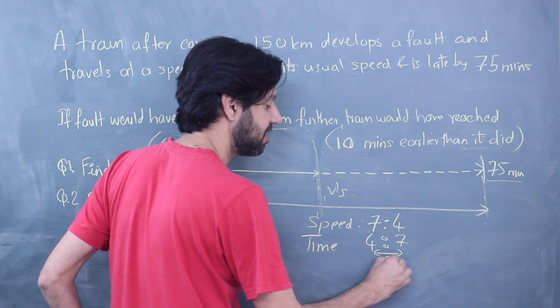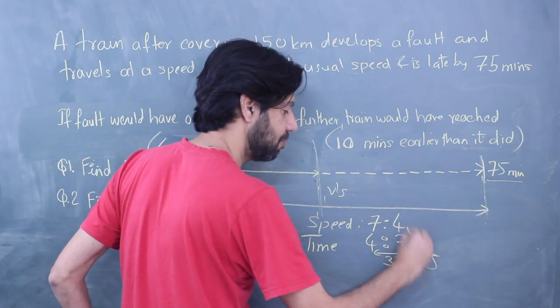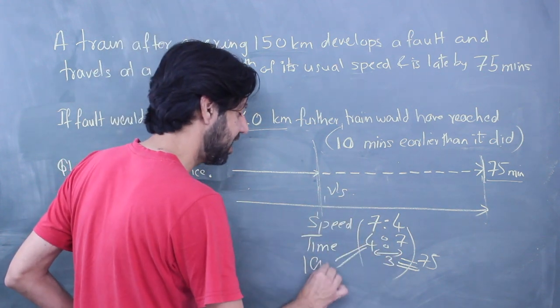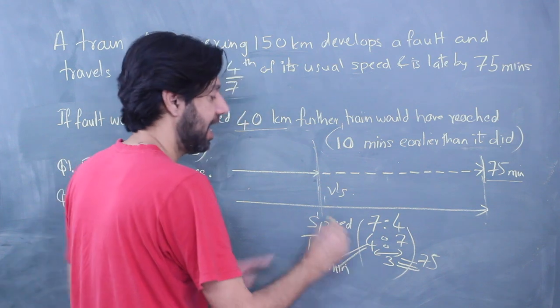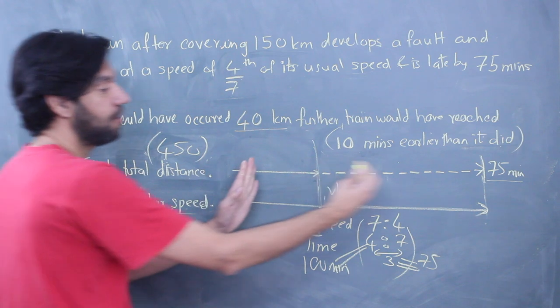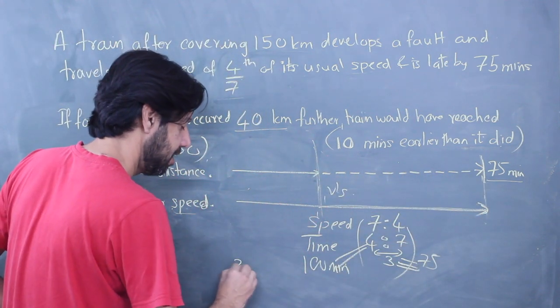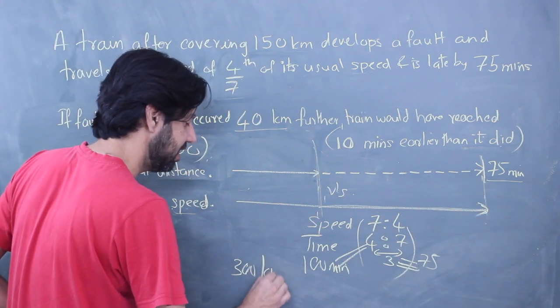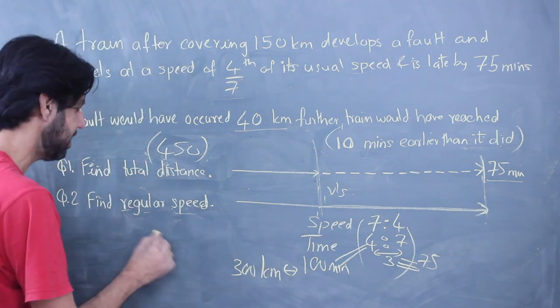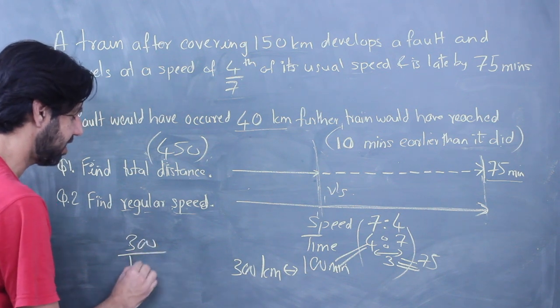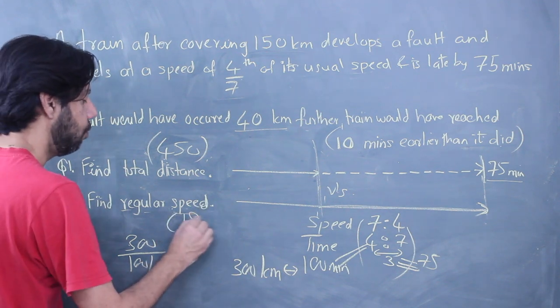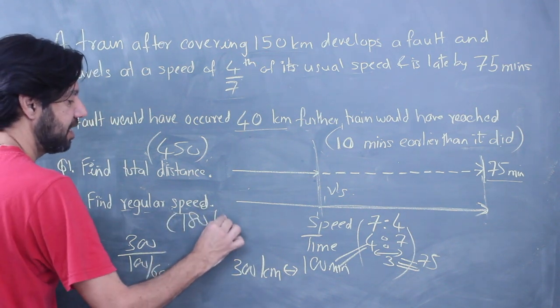So the 4 is going to be 100 minutes. I take 100 minutes at full speed for what distance? For 300 kilometers. 300 kilometers in 100 minutes, so speed equals distance by time. Time is in minutes, convert to hours by dividing by 60. Speed is 180 kilometers per hour.